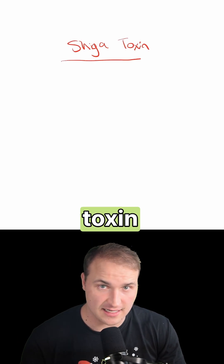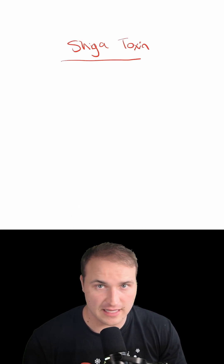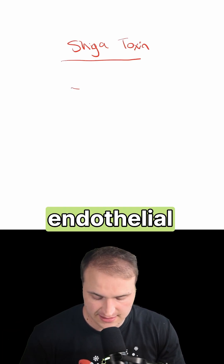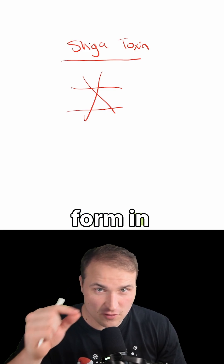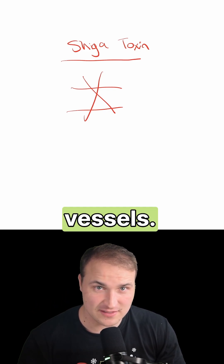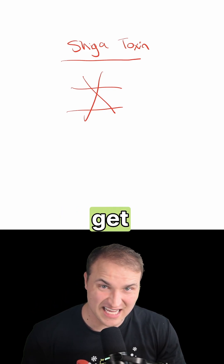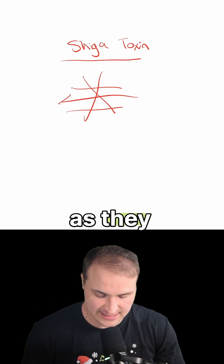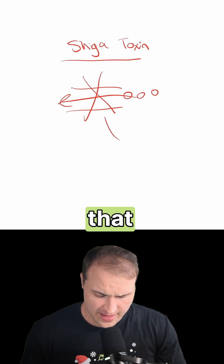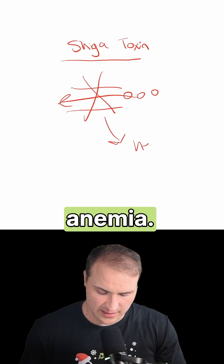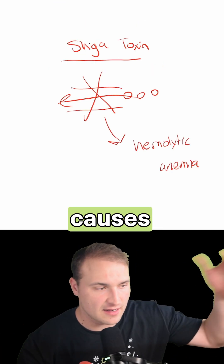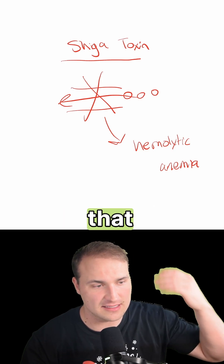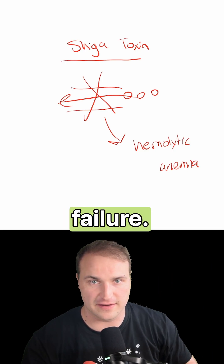What's high yield to know is that shiga toxin from E. coli damages the endothelial cells. Then you get small clots that form in these tiny blood vessels, and the red blood cells get spliced as they pass through. That causes hemolytic anemia. The platelets get used up, causing thrombocytopenia, and the kidneys get clogged, causing renal failure.